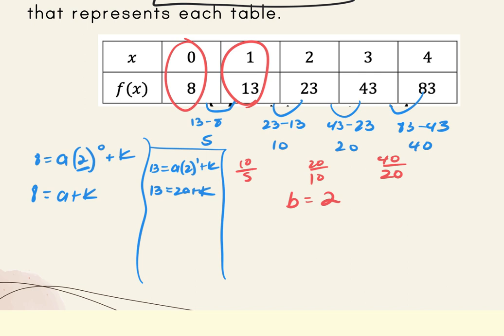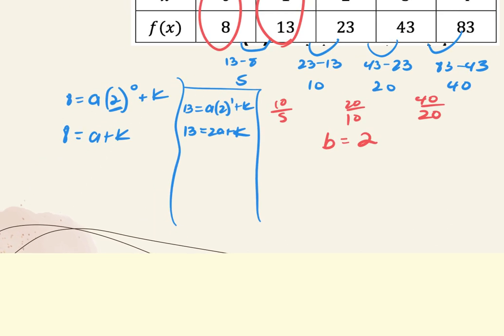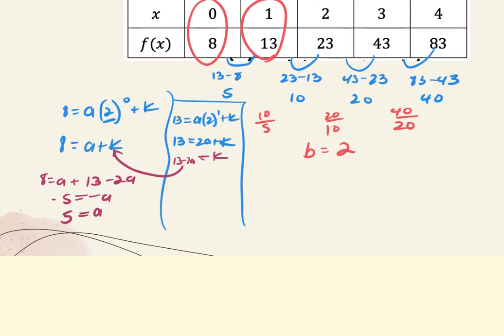You can choose between elimination and substitution. Using substitution: k equals 13 minus 2a, substitute into the first equation. 8 equals a plus 13 minus 2a, giving negative 5 equals negative a, so a equals 5. Plug back in: 8 equals 5 plus k, so k equals 3.